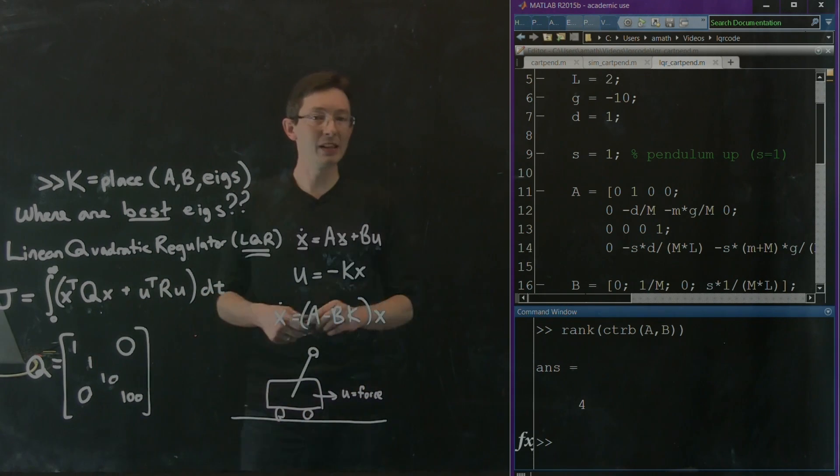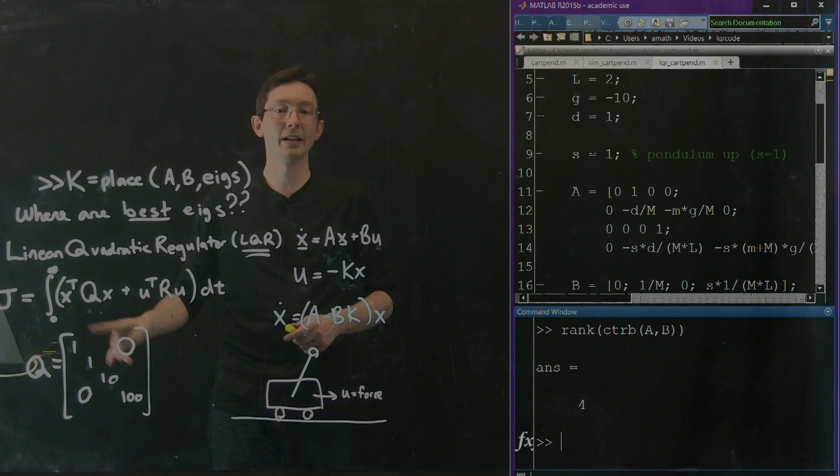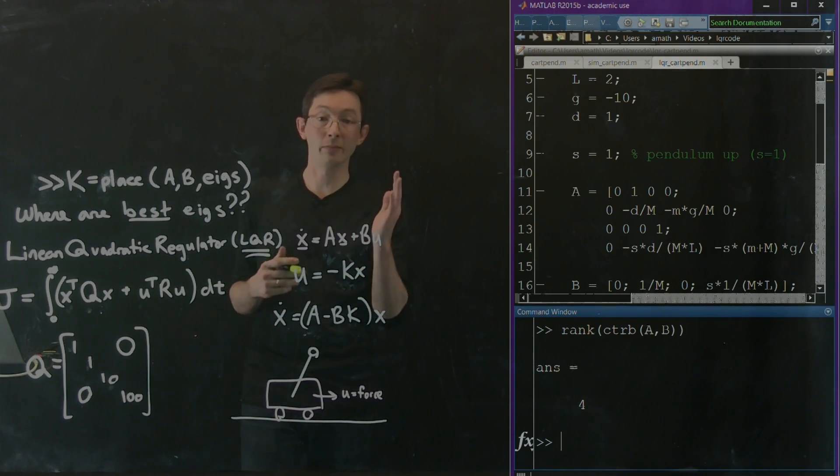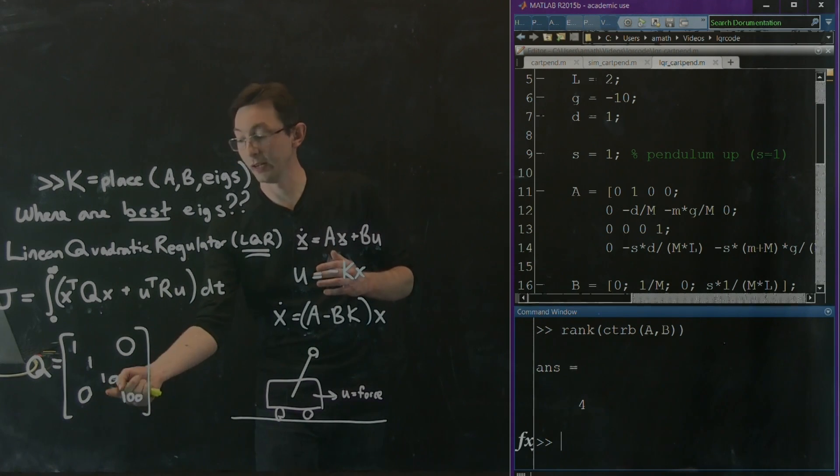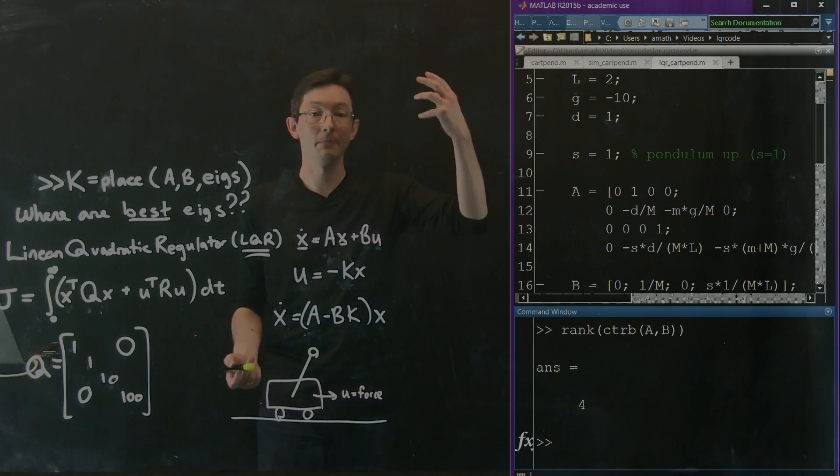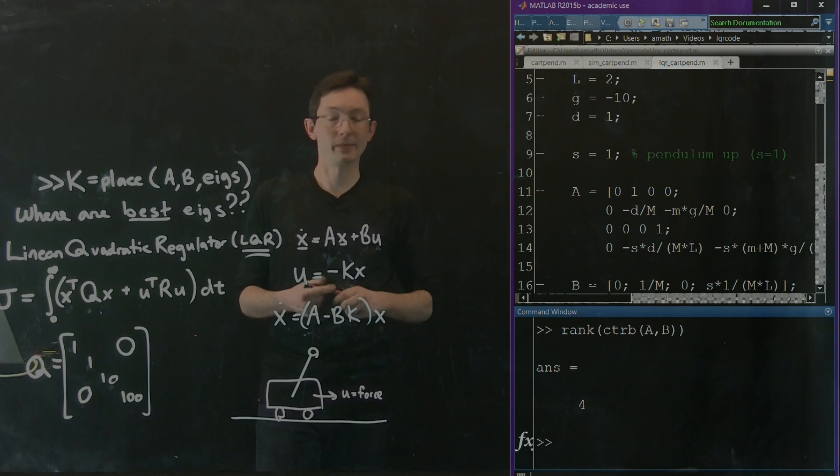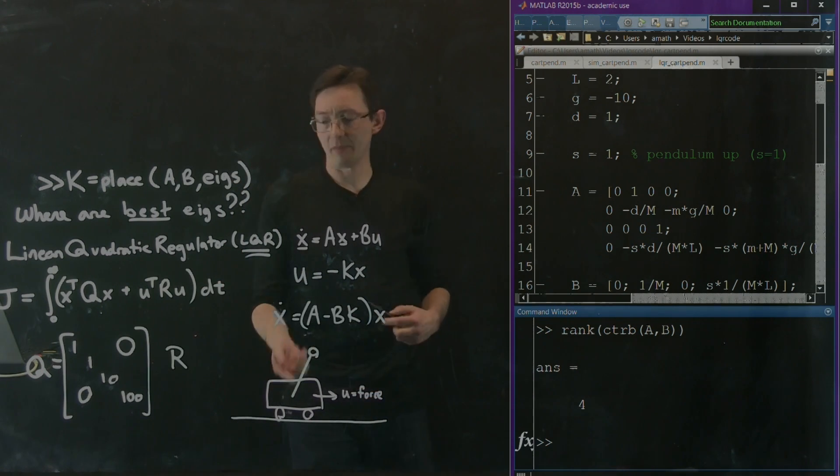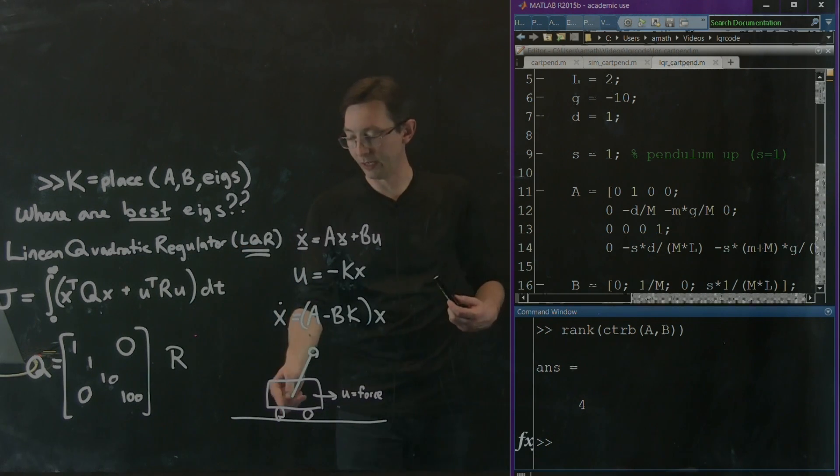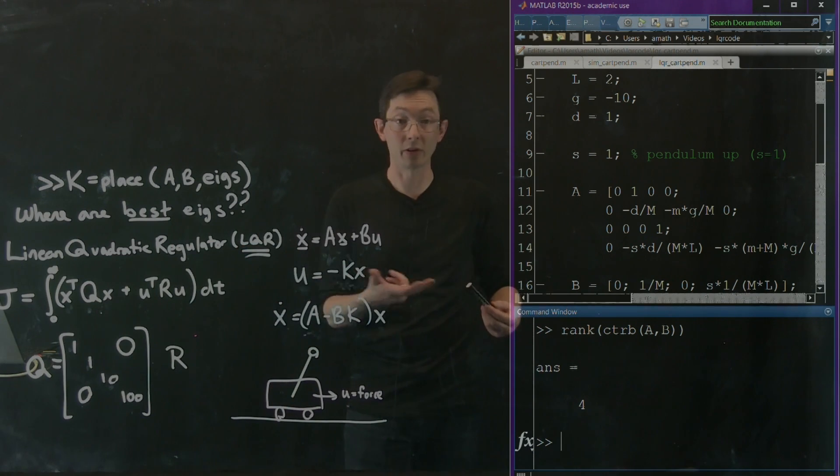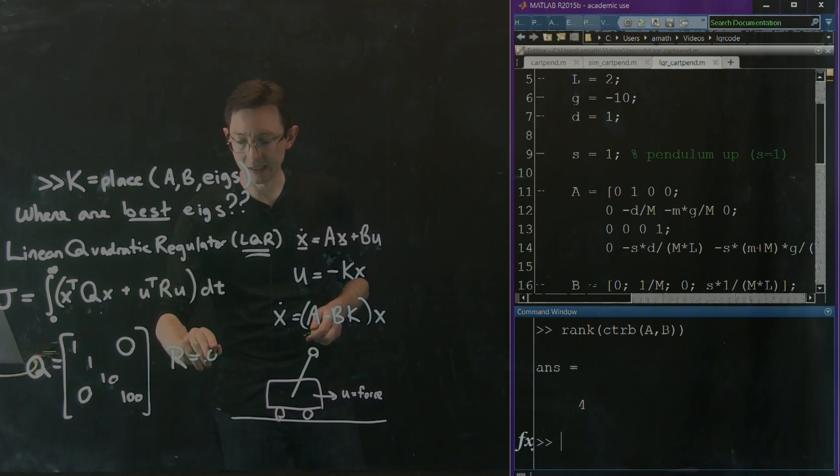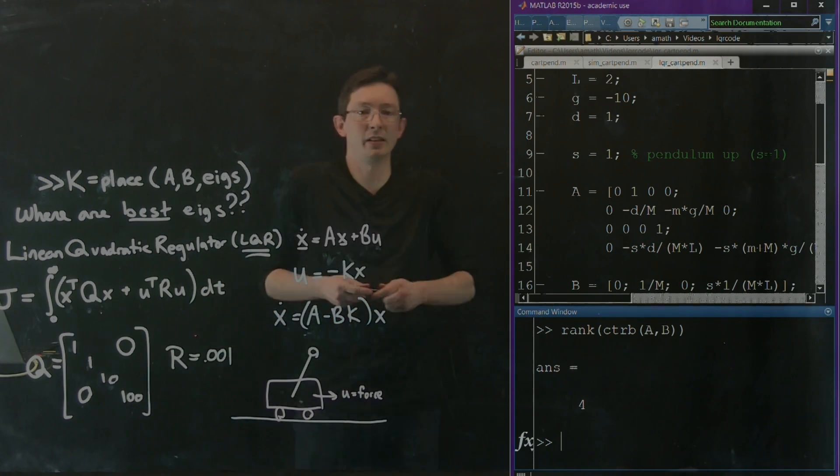And you get to play around with these numbers. Basically what you do, I might start with the identity matrix. And then if I think that the theta variable is really important, I'm going to bump up theta and theta dot by factors of 10 until I get good performance. And for R, maybe in this case, electricity is cheap. Maybe I have a really beefy electric motor. Maybe I over-spec my motor. And so I'm going to say R is really small, 0.001, basically free. I can really actuate this thing aggressively.